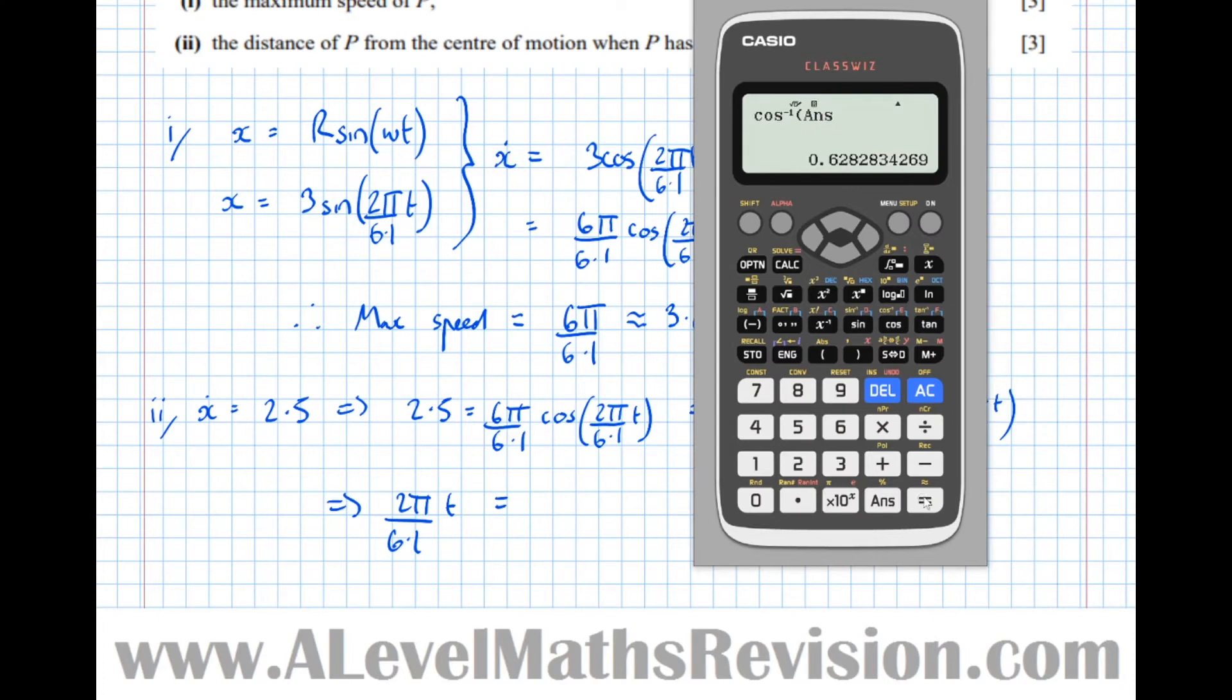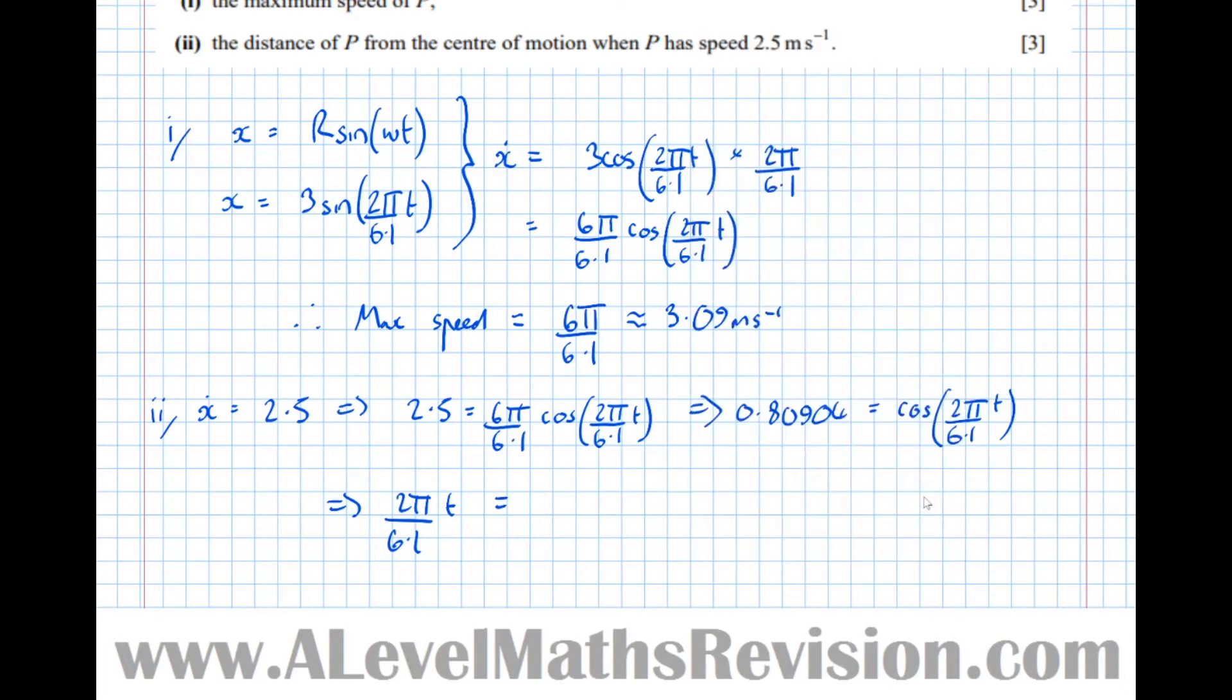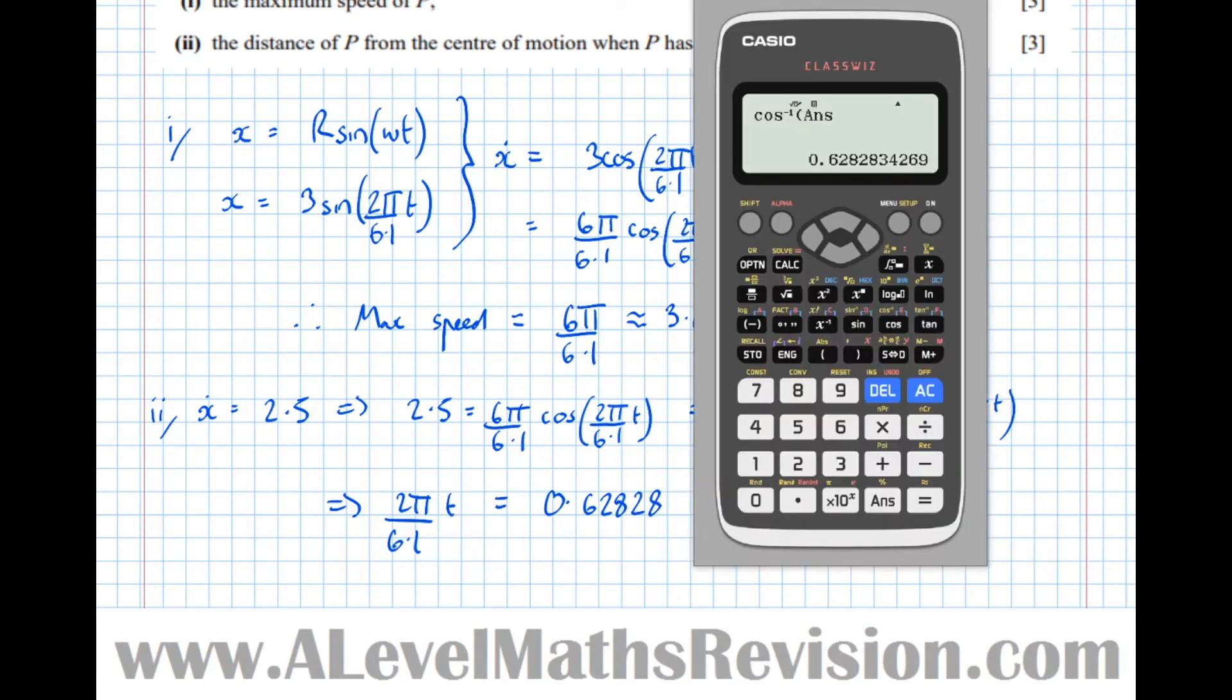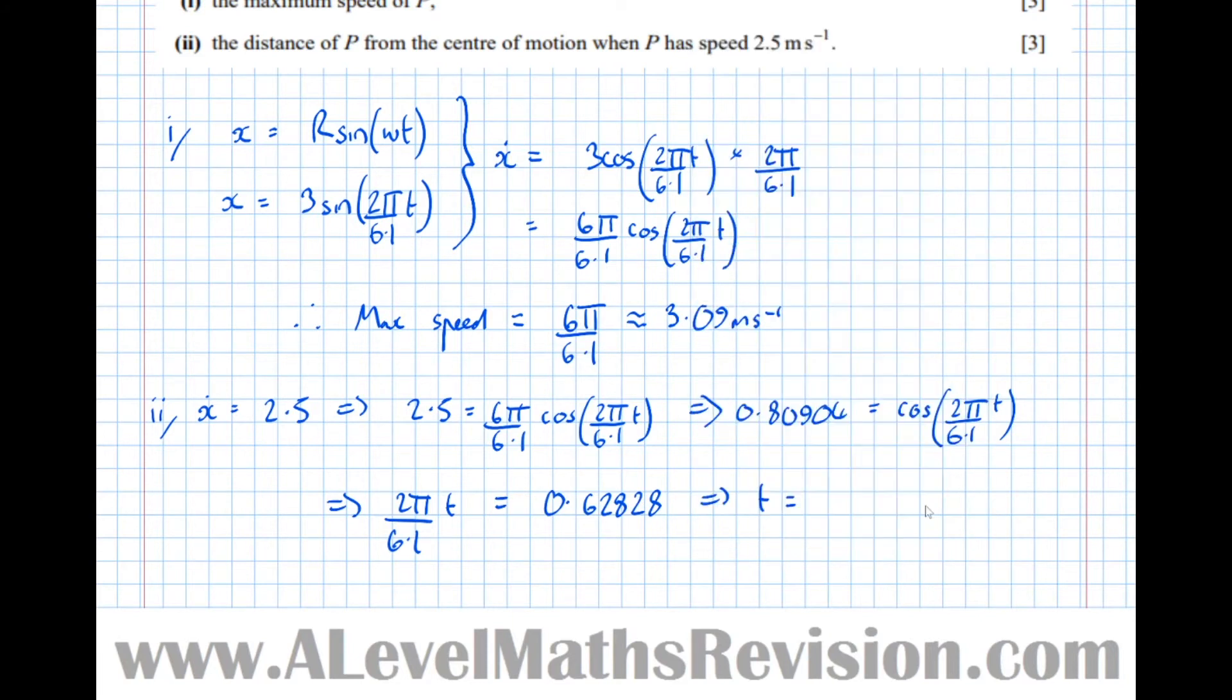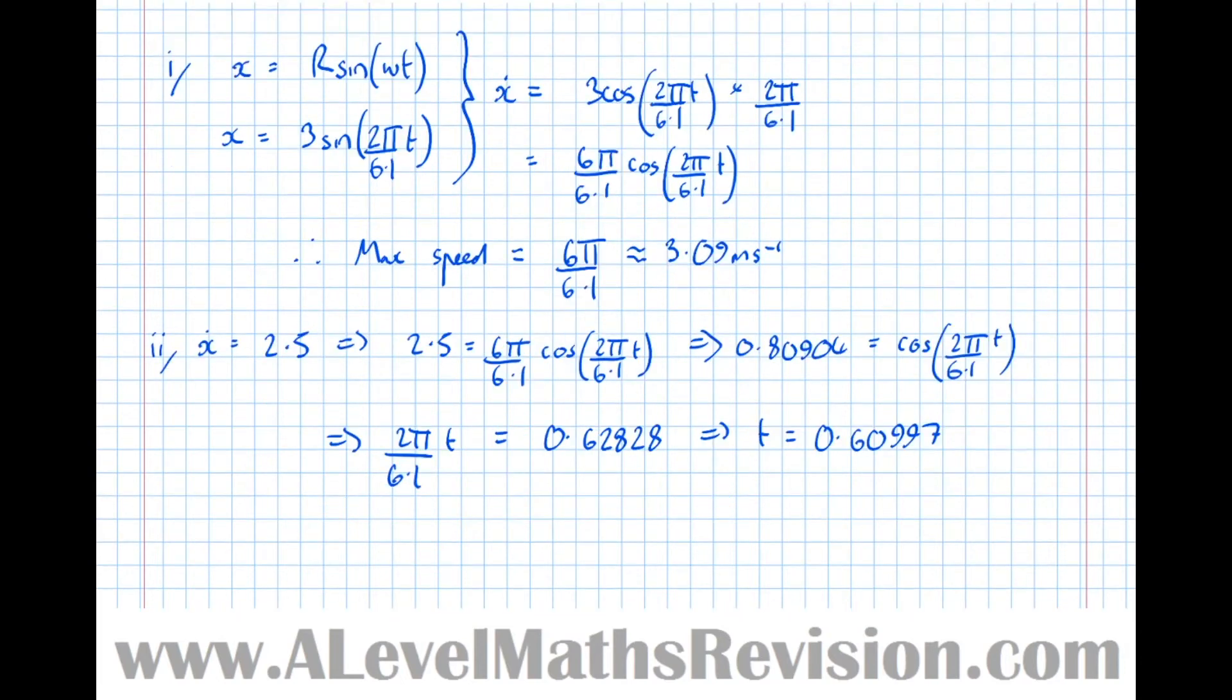Which means that the time is equal to that number divided by 2 pi over 6.1, which equals 0.60997.